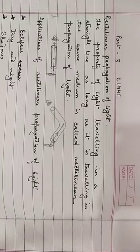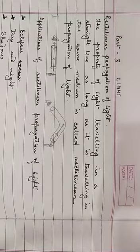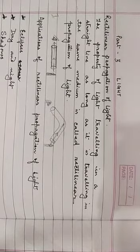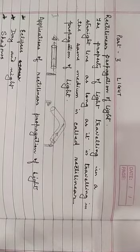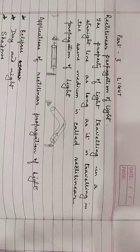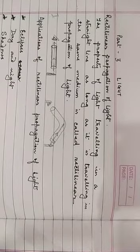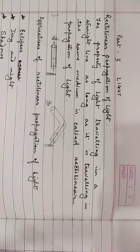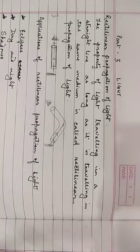When you are travelling at night and your father switches on the headlight of the car, you must have noticed that the beams of the light rays appear to travel in straight lines. Also, beams of light which come from the projection room in a cinema hall also suggest that light travels in straight lines.